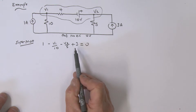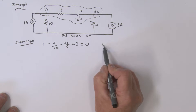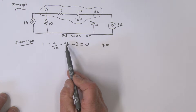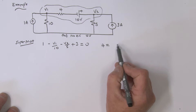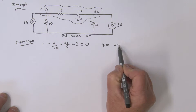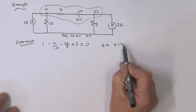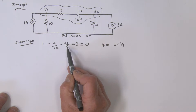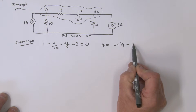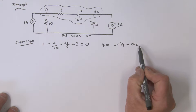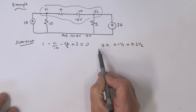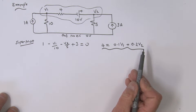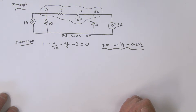Collecting terms: 3 and 1 give us 4, so 4 equals — taking the other terms to the right side — 0.1 times V1, plus V2 divided by 5, which is the same as 0.25 V2. So here we have one equation in terms of V1 and V2.